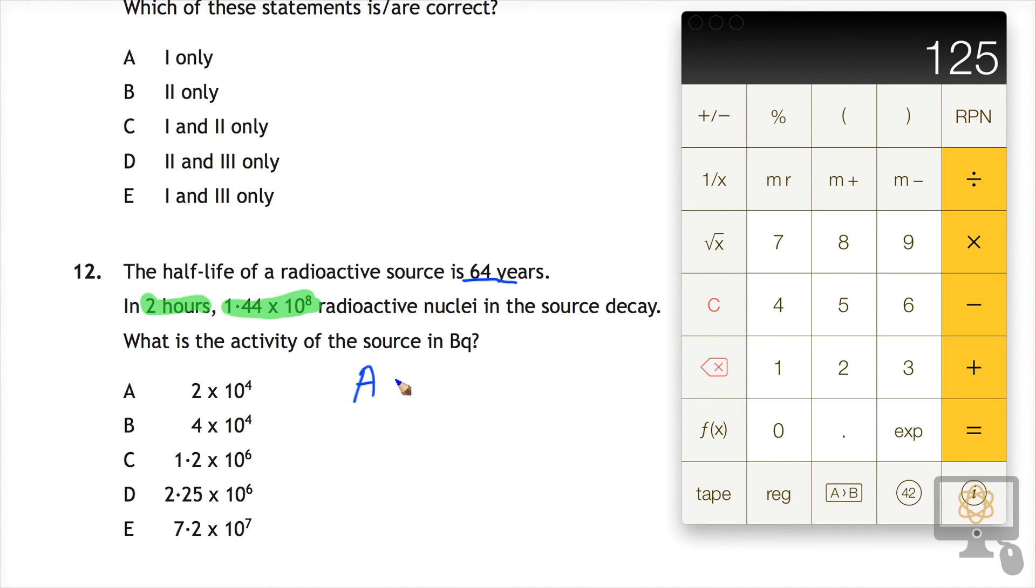So the formula for activity is the number of decays divided by the time taken for those decays. So we have all of that information in here. The half-life is in this case a red herring and we don't need to worry about it at all.